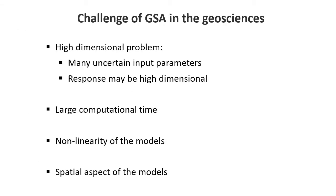The challenges of GSA in geosciences and uncertainty quantification are that the models are very high dimensional with many uncertain input parameters, and responses may also be high dimensional. Forward model evaluations typically require large computation times. The non-linearity is quite substantial, and what's unique in our cases is the spatial aspect of the model — spatial distributions of hydraulic connectivity, permeability, porosity, or layering — which may have considerable influence on the response. The challenge is how to quantify the influence of spatial variability, which is not a simple scalar variable, on some response.